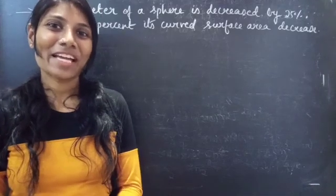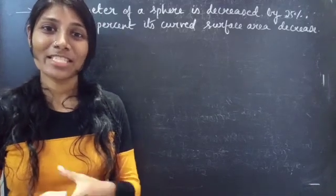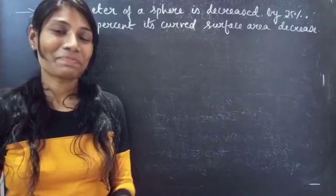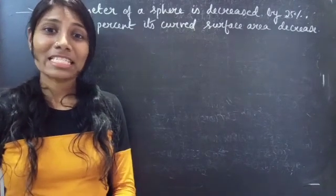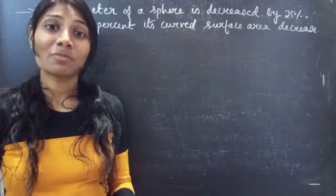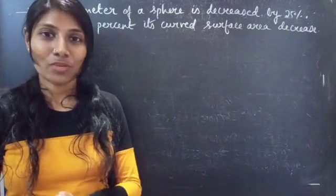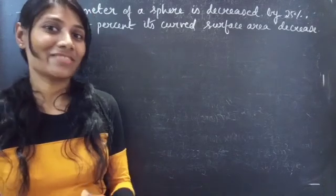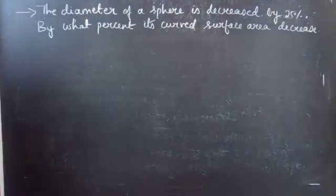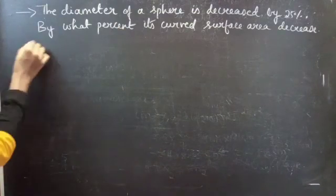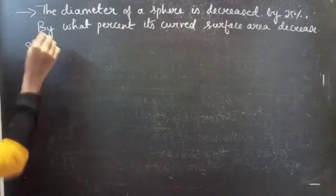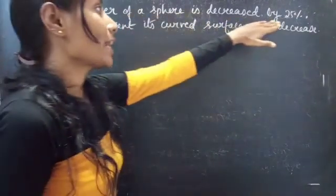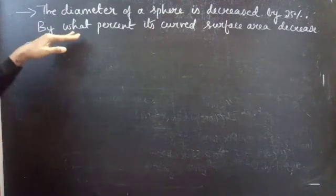Hello everyone, this is Kalpana here. In this video we are going to discuss a problem on spheres. If the diameter of a sphere is decreased by 25%, then at what percent does the curved surface area decrease?